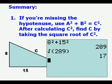Now, to summarize, if you're missing the hypotenuse or a long side, use A squared plus B squared equals C squared. After calculating C squared, find C by taking the square root of C squared.